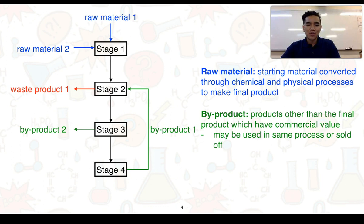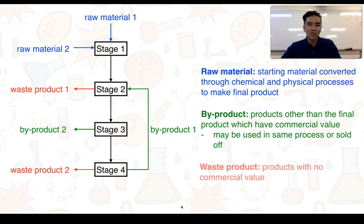Another type of product we could produce is a waste product. In this case we've got waste product one in stage two and waste product two in stage four. These types of products have essentially no commercial value, and this can be at a cost to the manufacturer because they will need to find a way to discard them, and that often requires money.